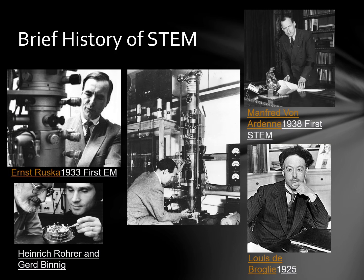In 1925, Louis de Broglie theorised that the wave-like properties of electrons have a wavelength much smaller than visible light. In 1933, Aaron Sureska utilised this theory and invented the first electron microscope. He also received a Nobel Prize in Physics for it, which he shared in 1986 with Benich and Rohrer. The first STEM was built by von Arden in 1938 in Berlin.